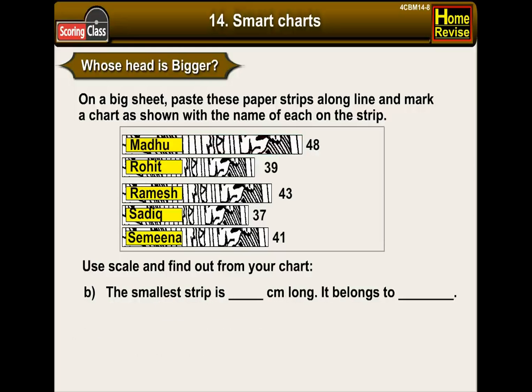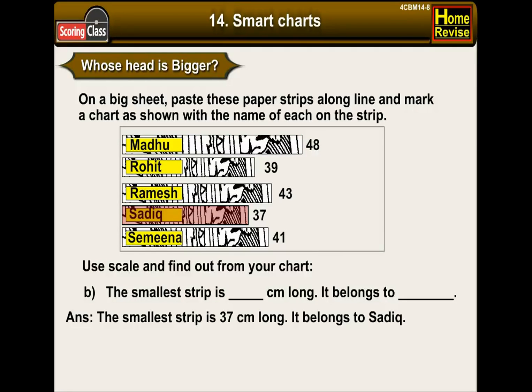B. The smallest strip is dash centimetres long and it belongs to dash. The smallest strip is 37 centimetres long and it belongs to Sadik.